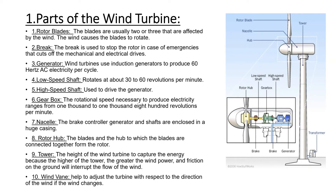The first part is the rotor blades — there are usually two or three blades that are affected by the wind. The next one is the brake, which is used to stop the rotor in case of emergency. After that is the generator; the wind turbine uses an induction generator to produce 60 Hz AC electricity per cycle.